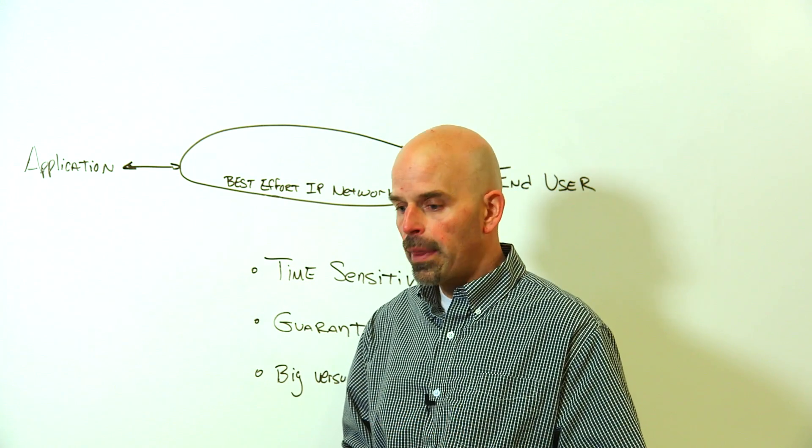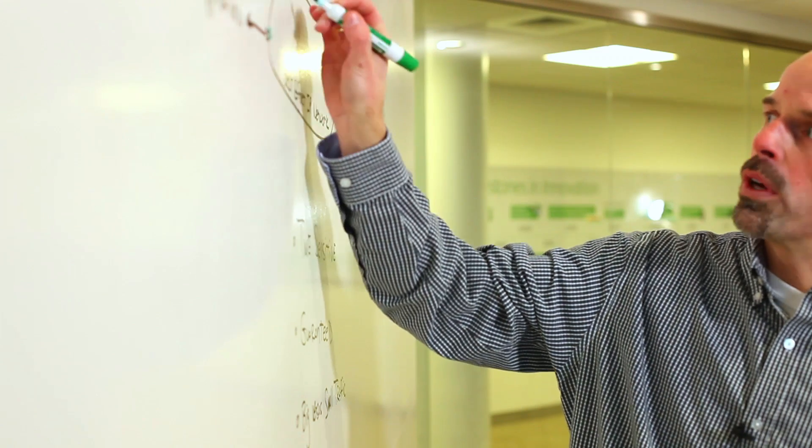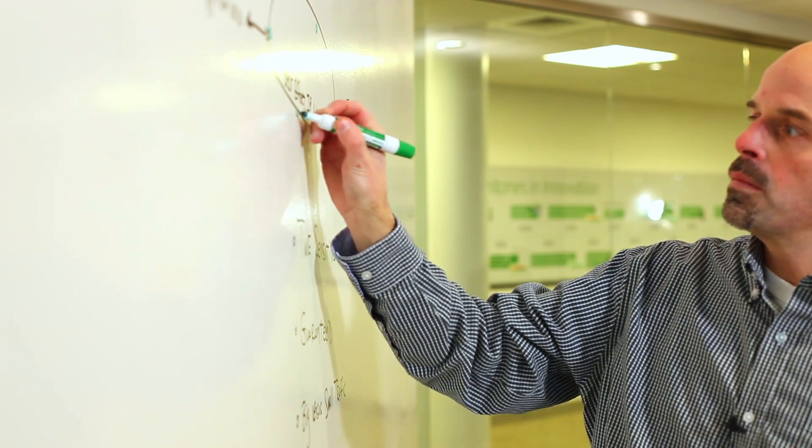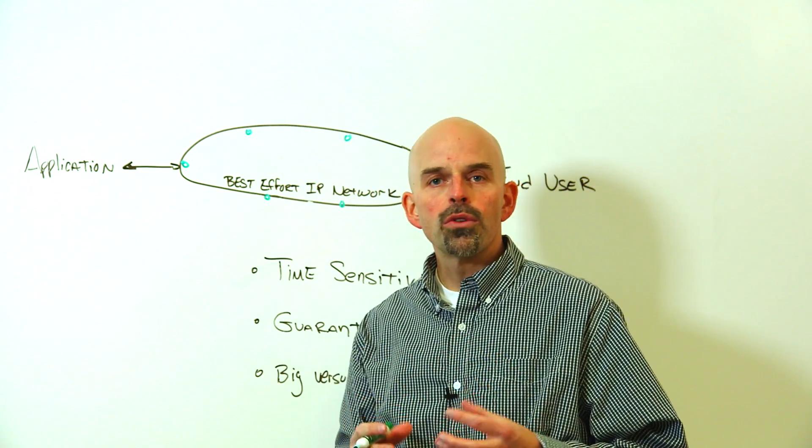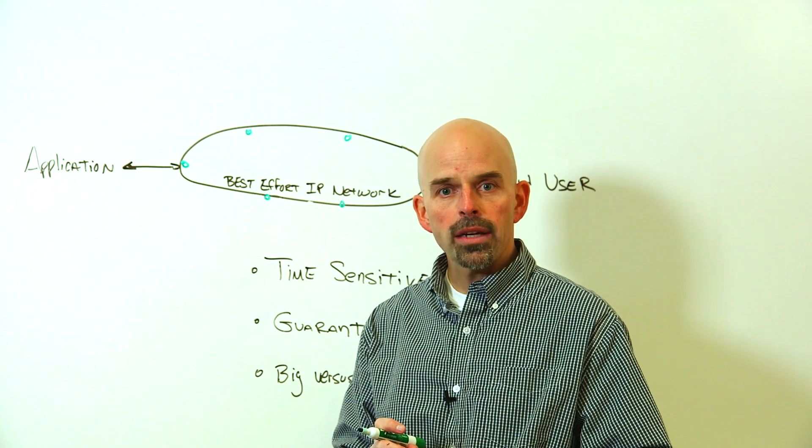This is where SinusIQ comes in. The first part of SinusIQ is that we add intelligent control points around the perimeter of the network, almost like a toll booth, to start to exact control over the traffic that is entering and exiting the network.